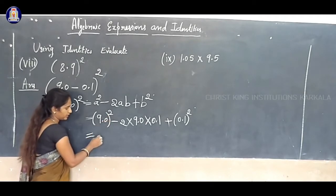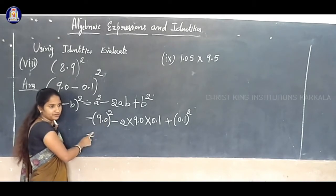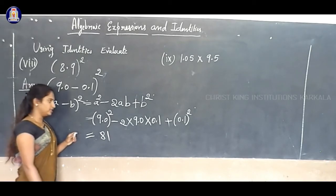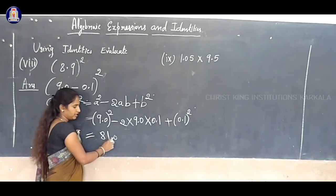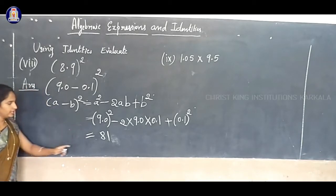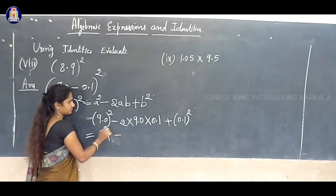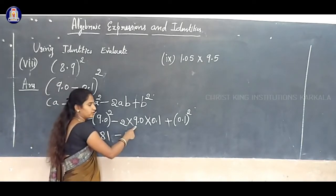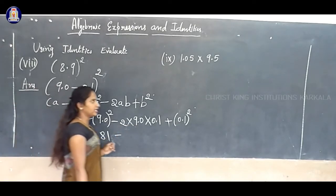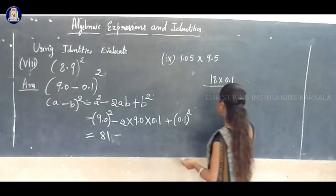9.0 whole square means 9 square. 9 square is 9 into 9. What is 9 into 9? 9 times 9 is 81. So, 9 whole square is 81. Minus 2 into 9.0 - 2 nines are 18. 18 into 0.1.